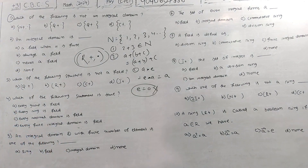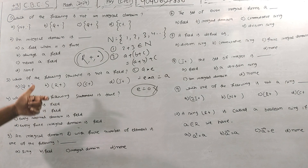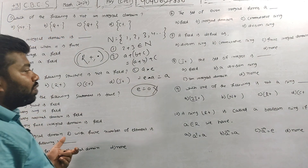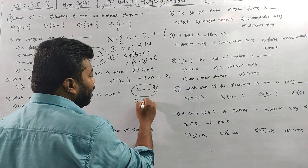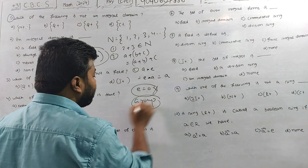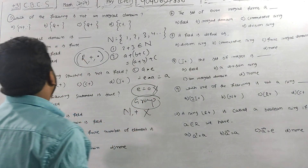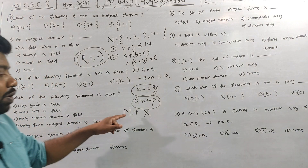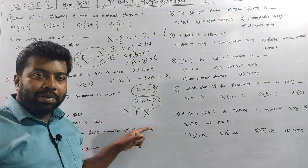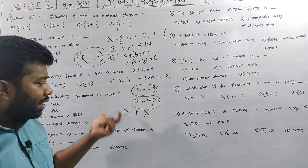Since the identity property fails, (N+, +) is not a group. From there we can tell: it is not a ring, not an integral domain. So (N+, +) is not a group.